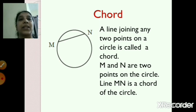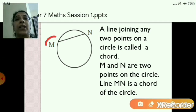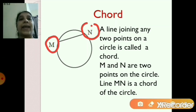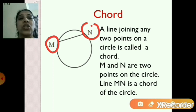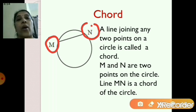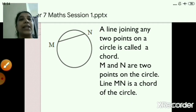Let's move to the next part, that is the chord. Now you can see a circle has been drawn and there are two points — point M and point N. So what is a chord? A line joining any two points on a circle is called a chord. Point M is one point and point N is the other point, and these two points are joined on the circle. So that is called a chord. Line MN is called as the chord of the circle.